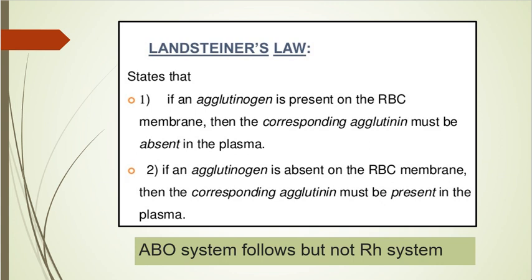Within the principle, you should know Landsteiner's Law, which states that if an agglutinogen is present on the RBC membrane, then the corresponding agglutinin (the antibody) must be absent in the plasma, otherwise there will be antigen-antibody reaction and clumping can occur. Conversely, if agglutinogen is absent, the corresponding agglutinin must be present.